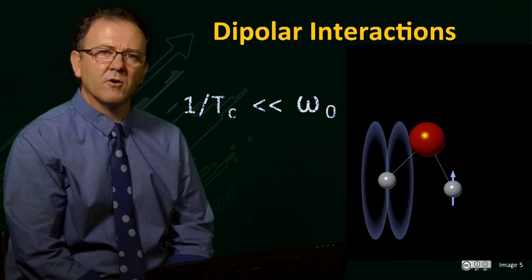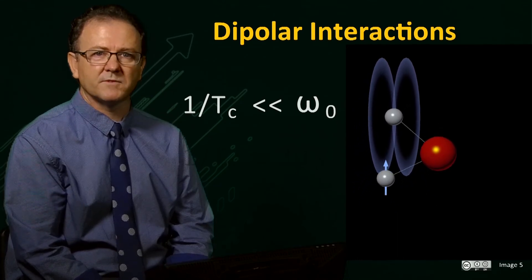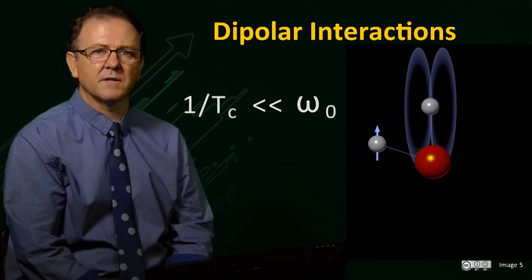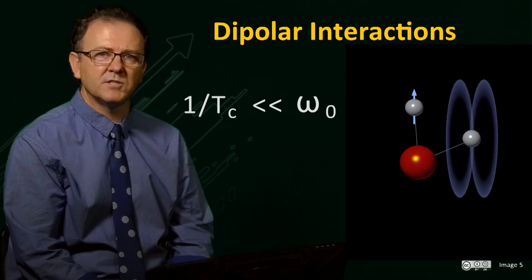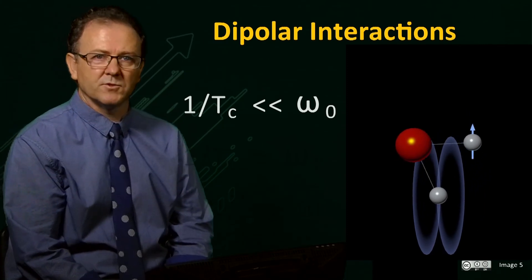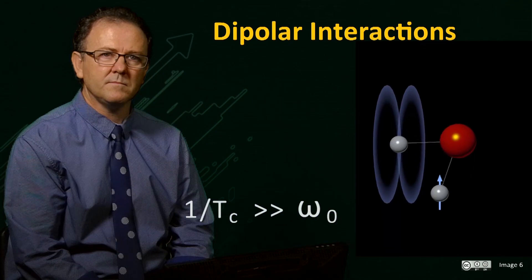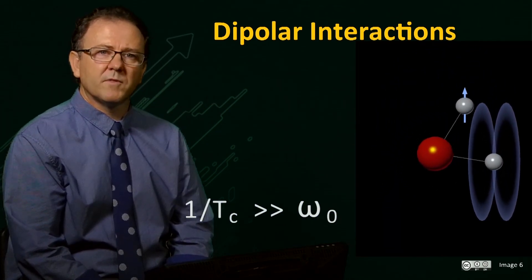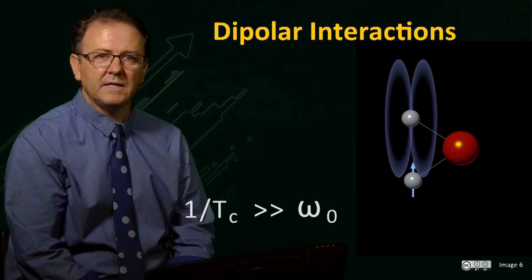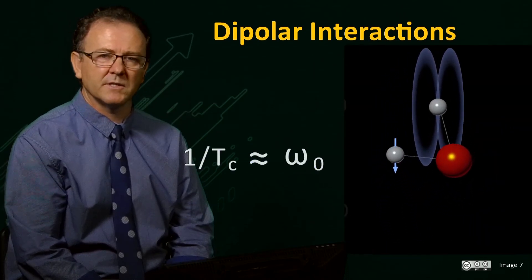So to recap, if the correlation time tau c of the molecule is such that the rate of tumbling is much slower than the nuclear Larmor frequency, no transition will take place. The same is true if the tumbling rate is too fast. However if the field fluctuations are occurring near the Larmor frequency, the spin will undergo a transition to the other orientation.